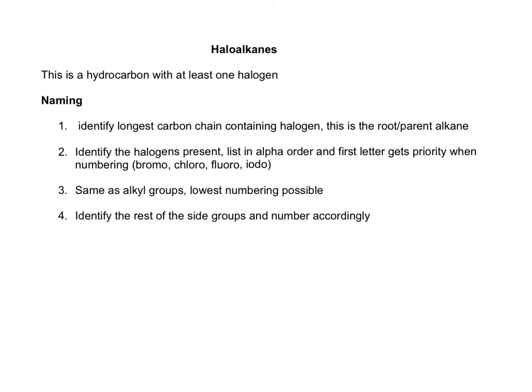You have to identify the halogens present. If there's two different kinds, you're going to list them in alphabetical order, and the first letter gets the priority when numbering. So numbering, we want to do the lowest number of possible combinations, and if there are other side groups, you're going to name them and number them accordingly, alphabetically.